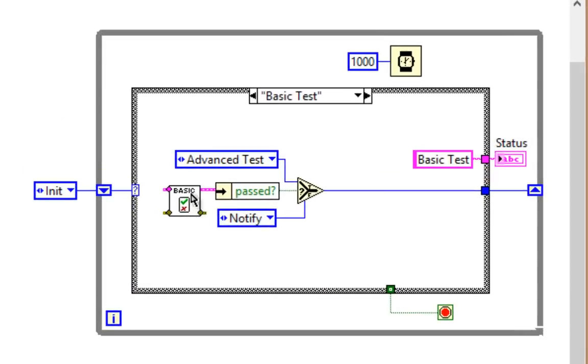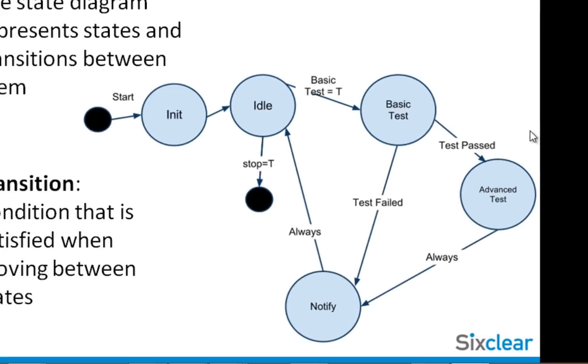So coming from basic test will be data here indicating whether the test has passed or not. If the test passed, advanced test passes out of our select function and chooses the next state. If we fail, we go to notify, just like we see in our state transition diagram. Pass, go to advanced test; fail, go to notify.